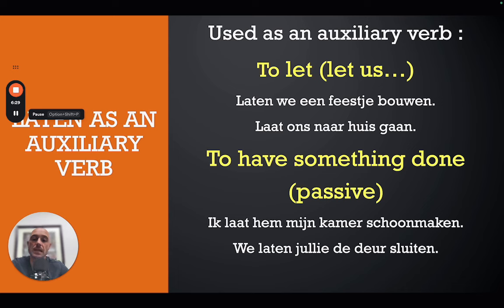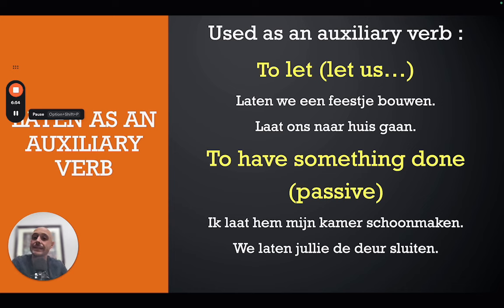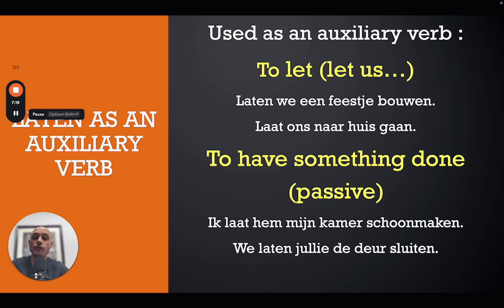The second auxiliary meaning is 'to have something done,' which can feel a bit passive. For example, 'ik laat hem mijn kamer schoonmaken' means 'I have him clean my room' — you're not doing the cleaning yourself, you're having someone else do it. Another example: 'we laten jullie de deur sluiten' — 'we have you close the door.' Again, passive because someone else is performing the action for you.